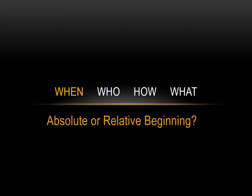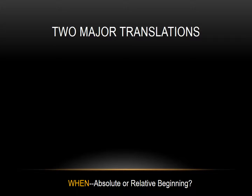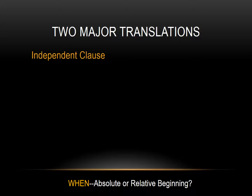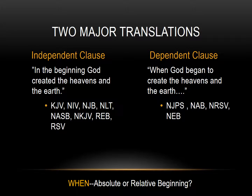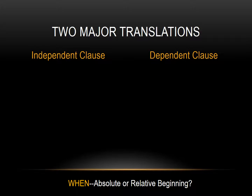The first question involving the when of origins asks whether Genesis 1 and 2 describe an absolute or relative beginning. The answer depends on the translation of Genesis 1:1. There are two major translations or interpretations. The standard translation until recently is an independent clause — a complete sentence that can stand alone: 'In the beginning God created the heavens and the earth.' In recent decades, some versions have translated Genesis 1:1 as a dependent clause: 'When God began to create the heavens and the earth.'